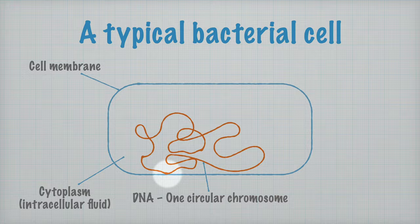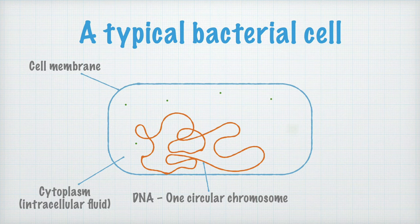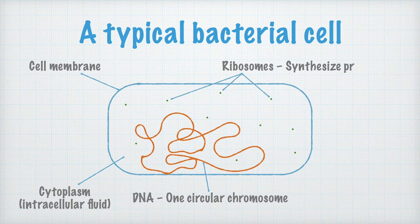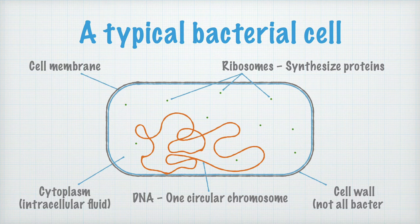I also add a lot of green dots in this figure — they represent something called ribosomes. What I want you to write down and learn is that ribosomes are structures that synthesize proteins. Exactly how they do that, I'll explain in a later video. Many bacteria also have a kind of cell wall, but far from every type of bacterium has that. There's also a lot of other stuff in a bacterial cell, but right now there's not enough space or time to go through more than this.